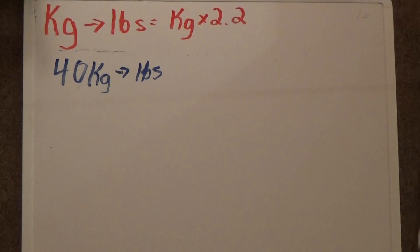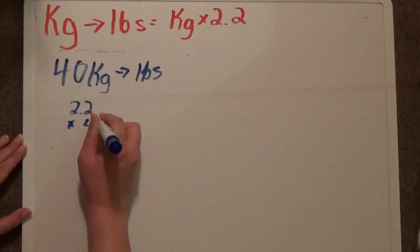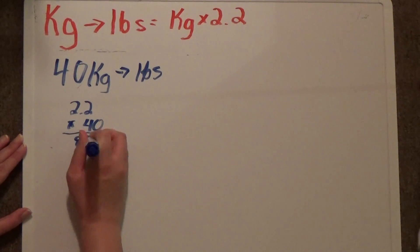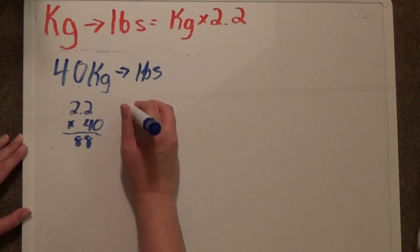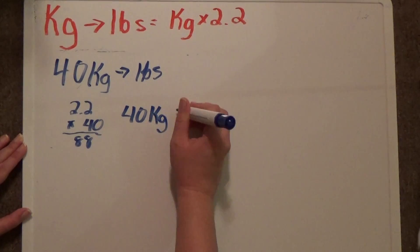So let's do this problem, 40 kilograms to pounds. 2.2 times 40, and that turns out to be 88. So, 40 kilograms is the same as 88 pounds.